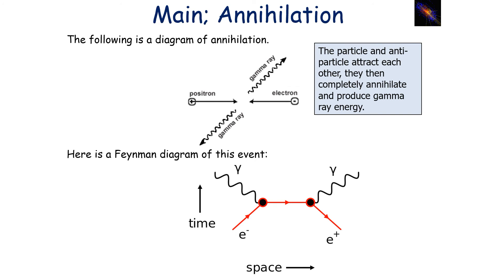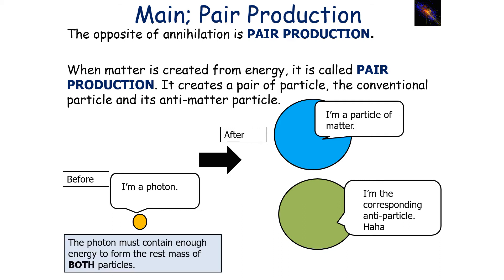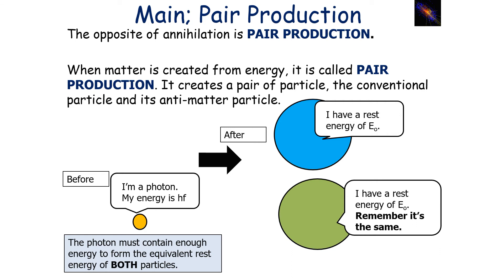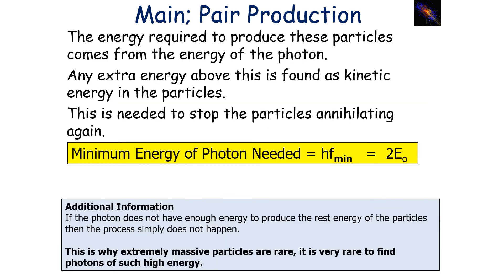The opposite of annihilation is pair production — when matter is created from energy. A photon turns into two particles: one of matter and one of antimatter. The photon must contain enough energy to form the rest mass of both particles. The photon has energy hf, and each particle-antiparticle has rest energy E₀, so hf = 2E₀. Any extra energy above this is released as kinetic energy. The minimum energy of a photon needed for pair production is hf_min = 2E₀.